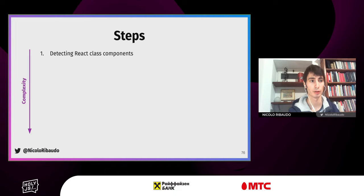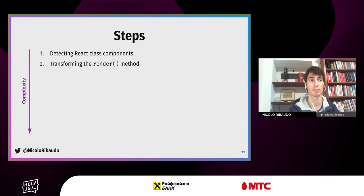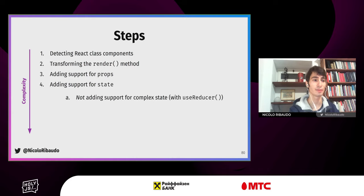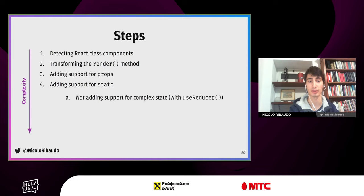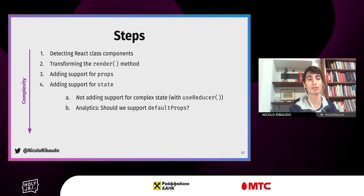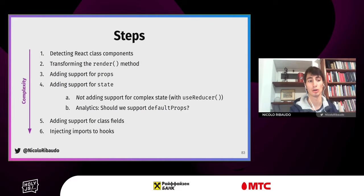The steps we'll follow to build this codemod: first, detect React class components (only transform React classes, not any class). Then transform components containing only a render method to function expressions. Then add support for props, then state — and at that point we'll take a break from the example to see how we can avoid adding support for something that might not be worth the time. Then we'll see how to build something to check if implementing a feature is necessary, then add support for class fields, and finally inject imports for the new hooks.